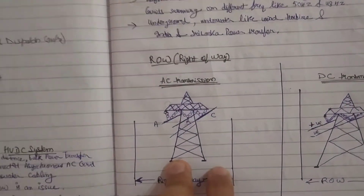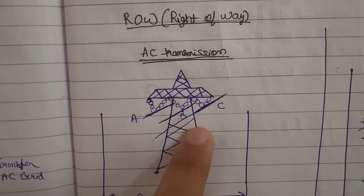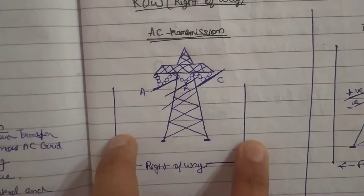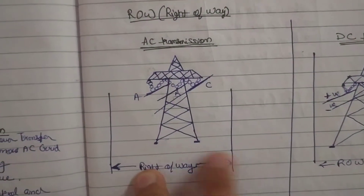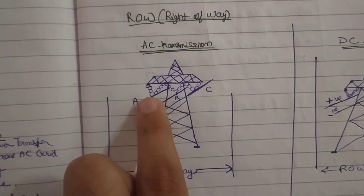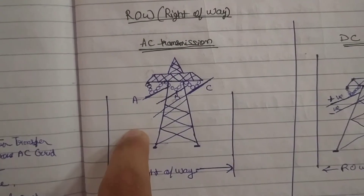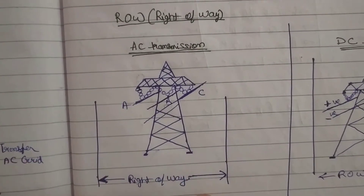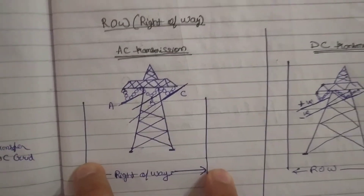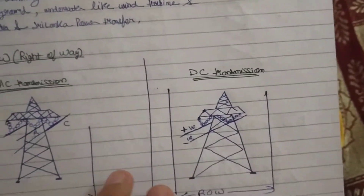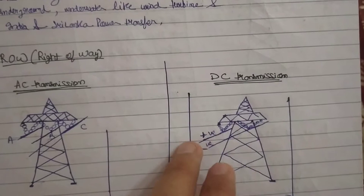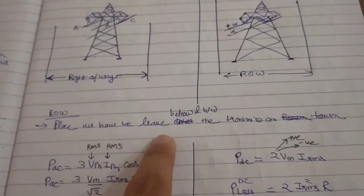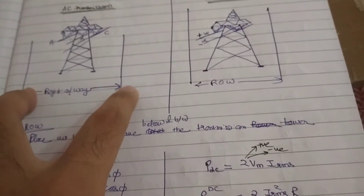This is a transmission tower which has three conductors: A, B, and C. What is right of way? When I build a tower, I have to occupy some area around it so that no person or activity is present in that area, because these lines can cause danger. If you stand under a transmission tower, you will have a headache because some interference is there. So right of way means the area below the tower that I have to leave. For a DC transmission line, there are two conductors — one positive and one negative — and the right of way will be less because there are only two conductors.